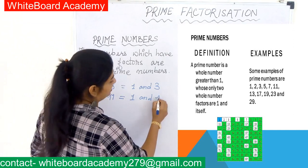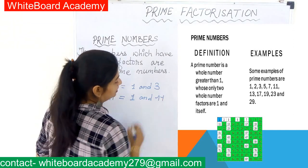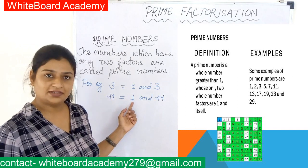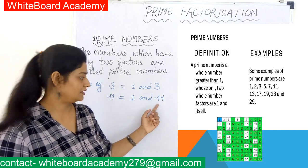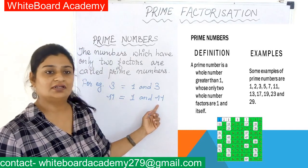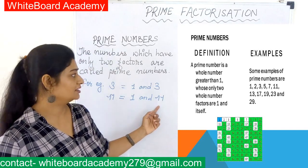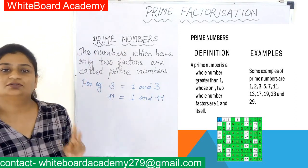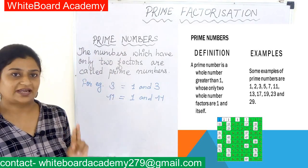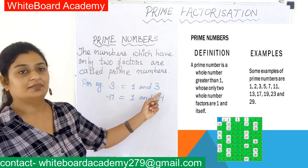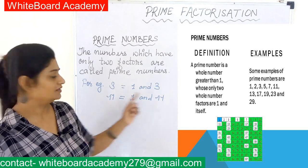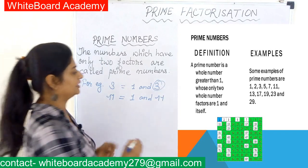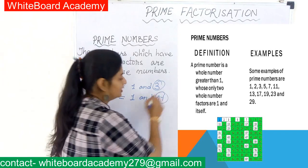Let's take another example: 11. Again, 11 also has only two factors, that is 1 and 11. So 11 can also be divided only by 1 and 11 exactly, without leaving a remainder. Such numbers are known as prime numbers, and the two factors are always 1 and the number itself.